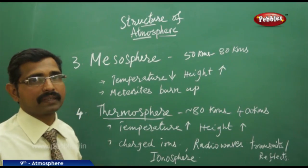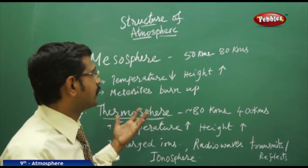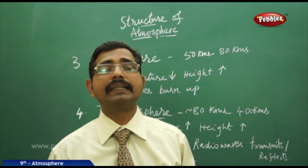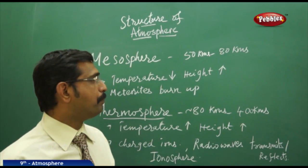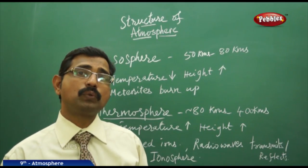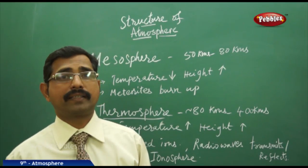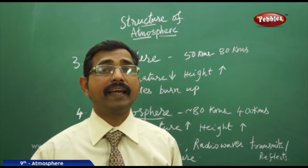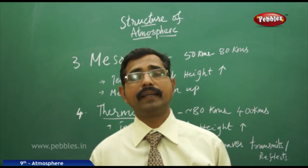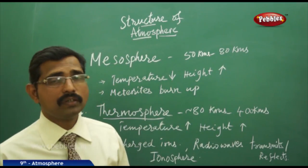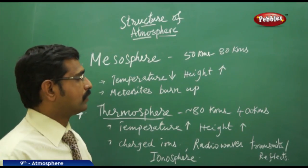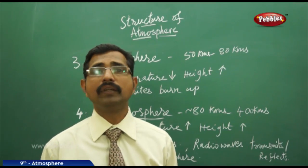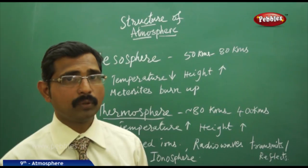The fifth and uppermost layer of the earth's atmosphere is the exosphere, covering beyond 400 km to 800 km and further. Very little is known about the exosphere — 'exo' means outside, and it is the layer existing above the thermosphere. Scientists are still discovering information about the exosphere, as it remains not fully understood.